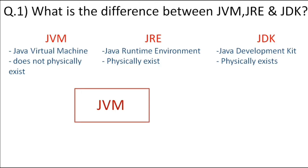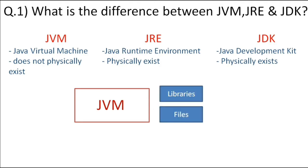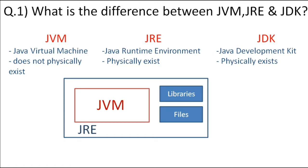So this is your JVM. It is a virtual machine to run your application — it does not physically exist. It is a virtual machine on which your application runs. But JVM requires some libraries and files to run the application, so the package of these files, libraries, and JVM is called JRE.